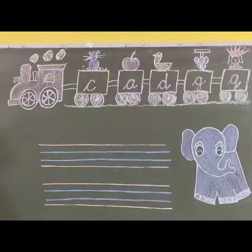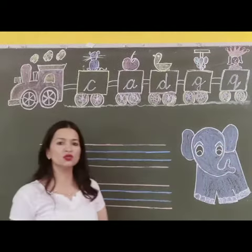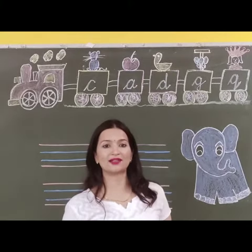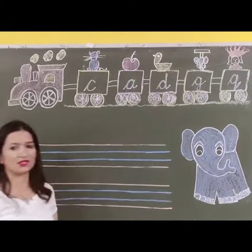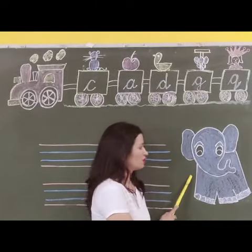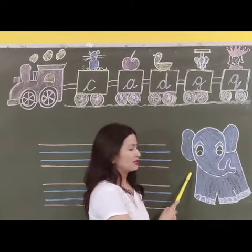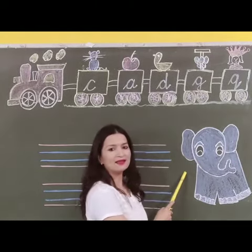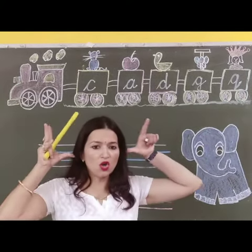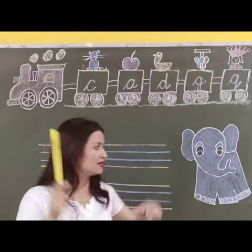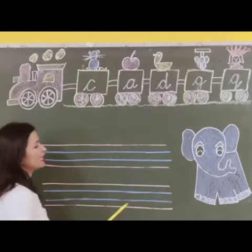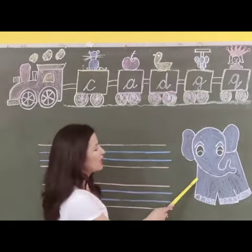Now today we are going to learn a new letter. What we are going to learn? Letter E. Cursive letter E. Can you see this picture? Who is this? This is an elephant. Elephant is having long ears and a long trunk. E for elephant.